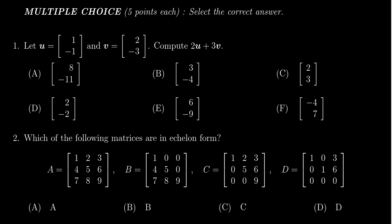We're given two vectors u which is [1, -1] and v [2, -3] in R2, and we're asked to compute the linear combination 2u plus 3v.